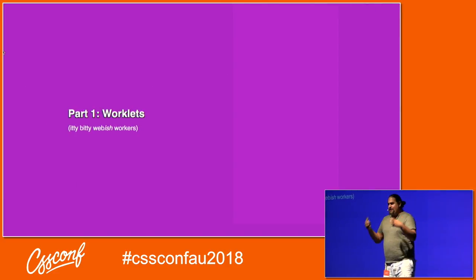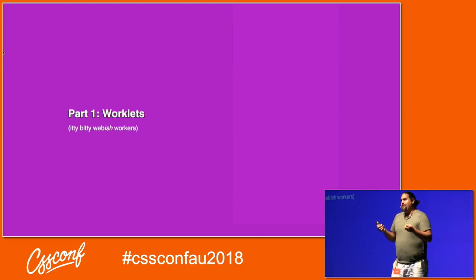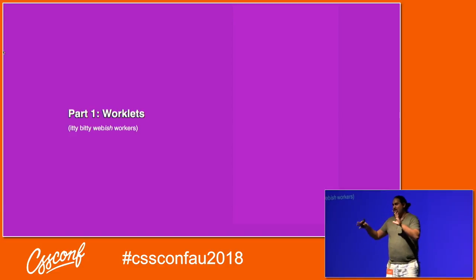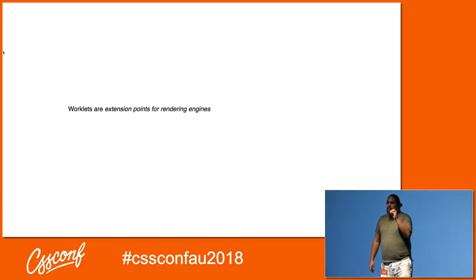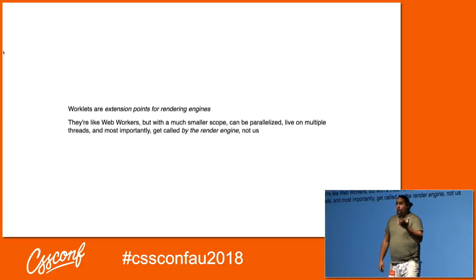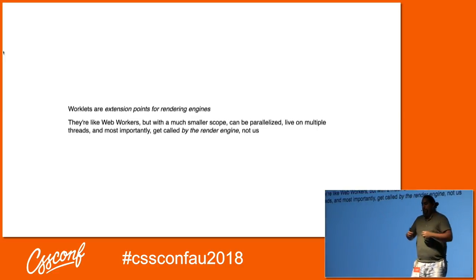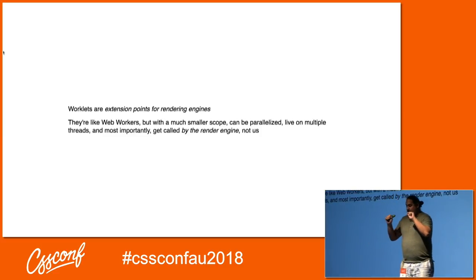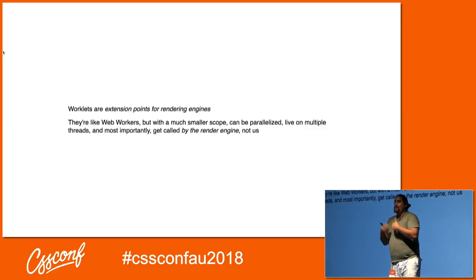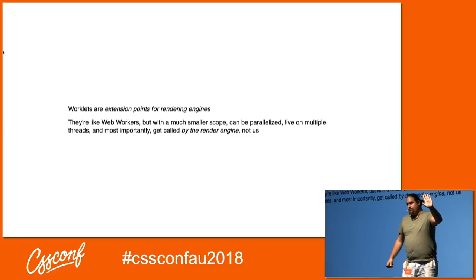The first part and the underlying thing of Houdini are worklets. Worklets are like itty-bitty web-ish workers — extension points for render engines. They're like web workers but they work on a much smaller scope. Importantly, they can be parallelized. They live on multiple threads, and they can get called by the render engine themselves. They're not something that we call — we're basically writing instructions for the render engine to use when they need it.